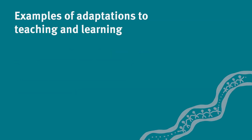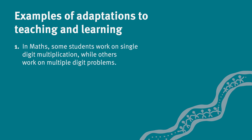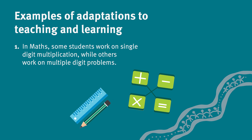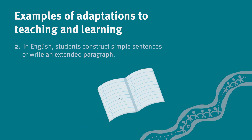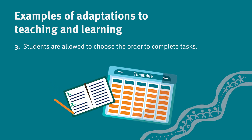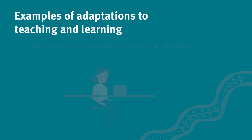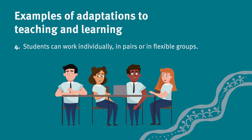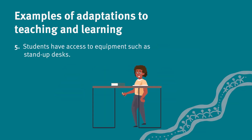Here are some examples of adaptations to teaching and learning. In maths, some students work on single digit multiplication, while others work on multiple digit problems. In English, students construct simple sentences or write an extended paragraph. Students are allowed to choose the order to complete tasks. Students can work individually, in pairs, or in flexible groups. Students have access to equipment such as stand-up desks.